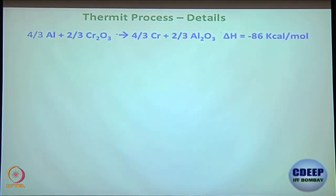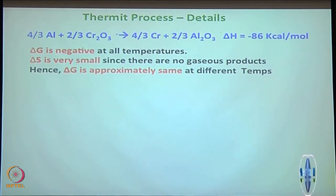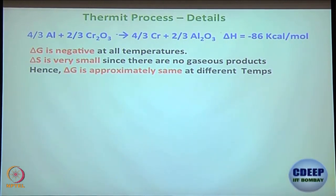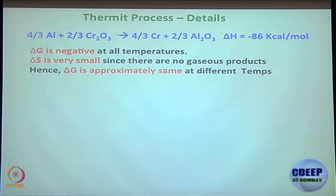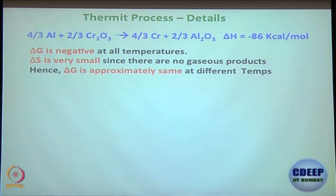This is what we know as the thermite process. Delta H is minus 86, delta G is negative. Since delta H is small, delta G is approximately the same at different temperatures. So with respect to temperature you are not going to see much difference in delta G — whatever temperature you do the reaction, you are supposed to get the thermite product: alumina formation and chromium oxide converted to chromium, because it becomes independent of temperature.